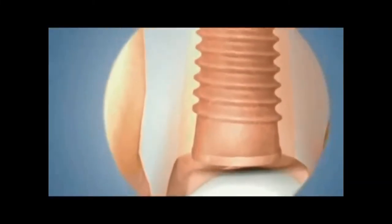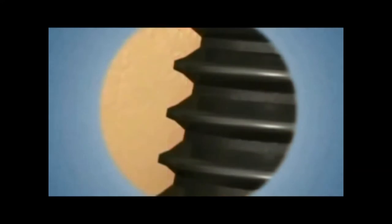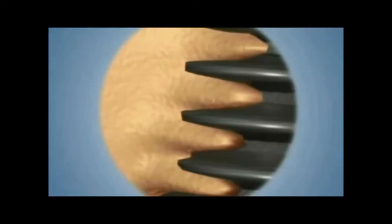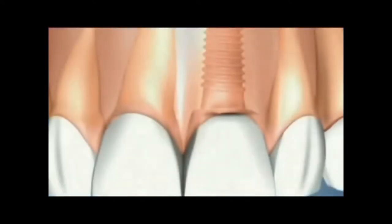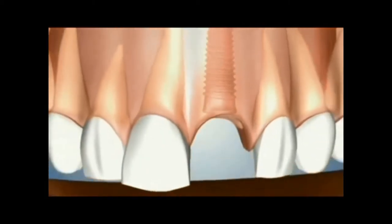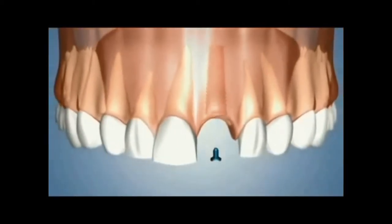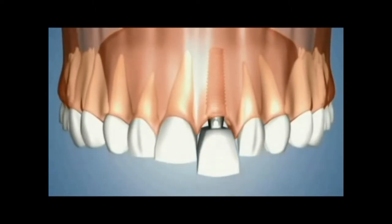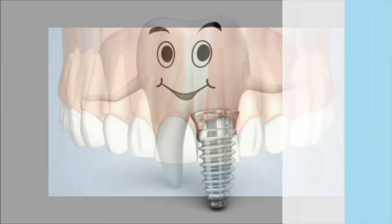The site immediately begins to heal. A process known as osseointegration takes place, where bone molecules begin to attach themselves to the titanium surrounding the implant. It usually takes between two to four months for the bone to securely bond to the entire implant surface. The final phase involves the custom restoration being fitted and securely placed.